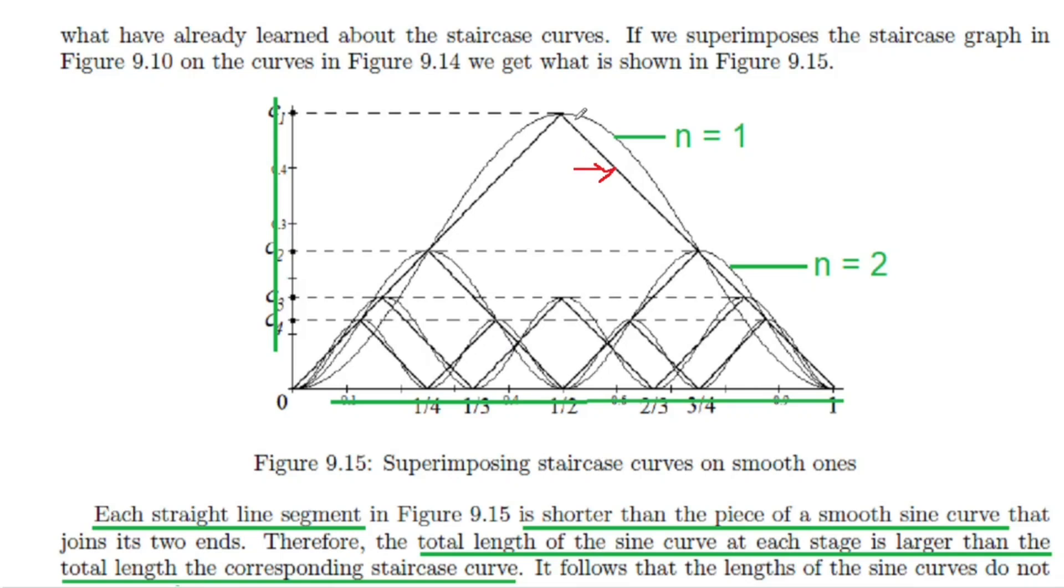Further, the length of each staircase path segment is the length of a straight line, and therefore shorter than the corresponding piece of the sine curve. Now, adding things up, the total length of the sine curve at each stage turns out to be larger than the total length of the corresponding staircase curve. We already know that the staircase curves always have length 2.